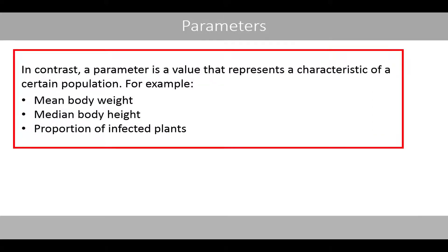In contrast, a parameter is a value that represents a characteristic of a certain population. For example, mean body weight, median body height, and proportion of infected plants are examples of parameters.